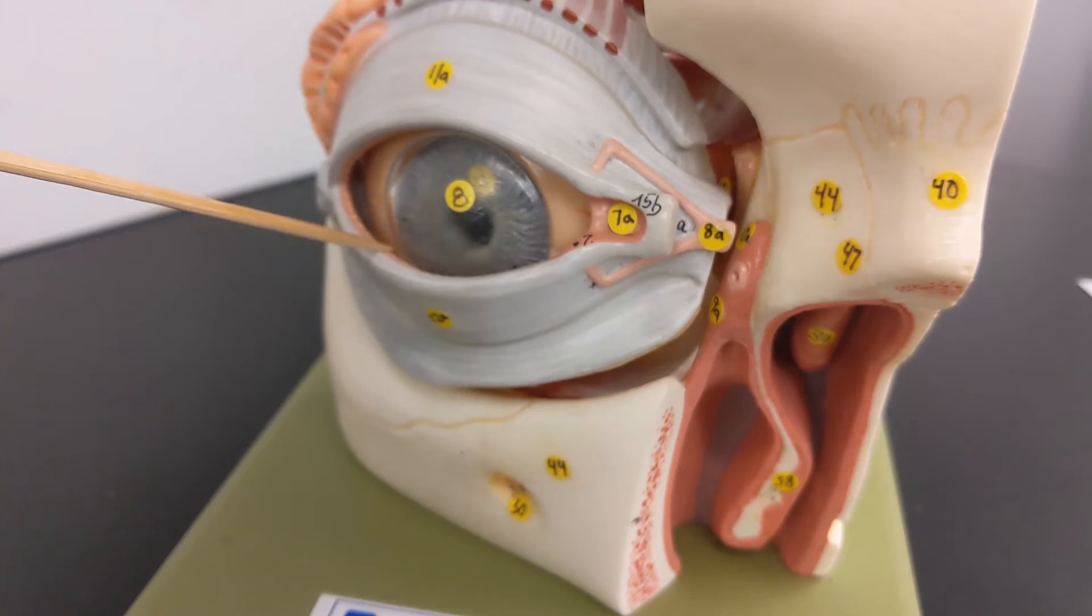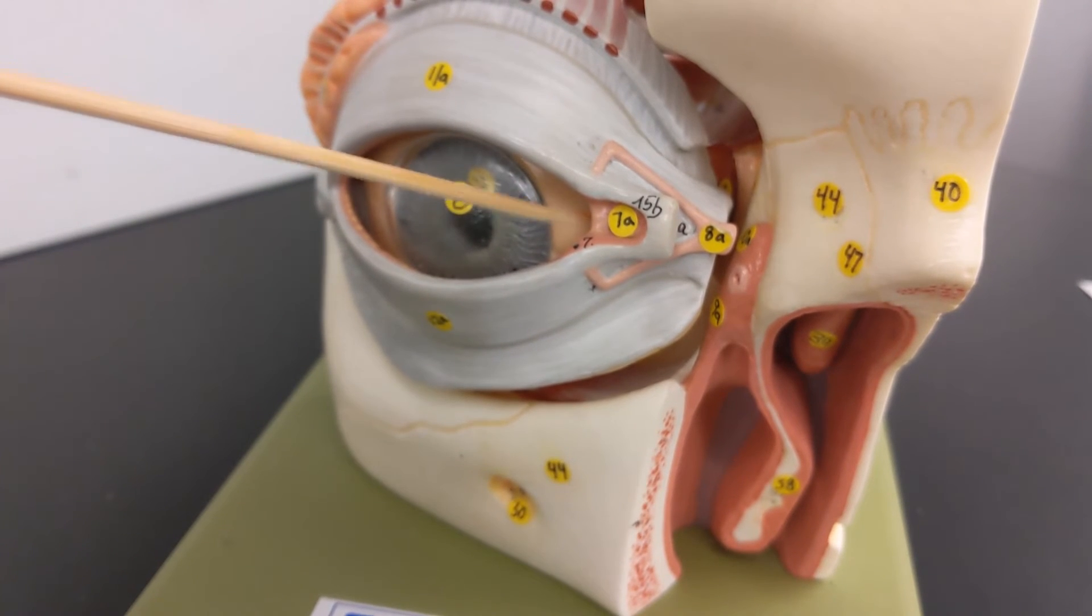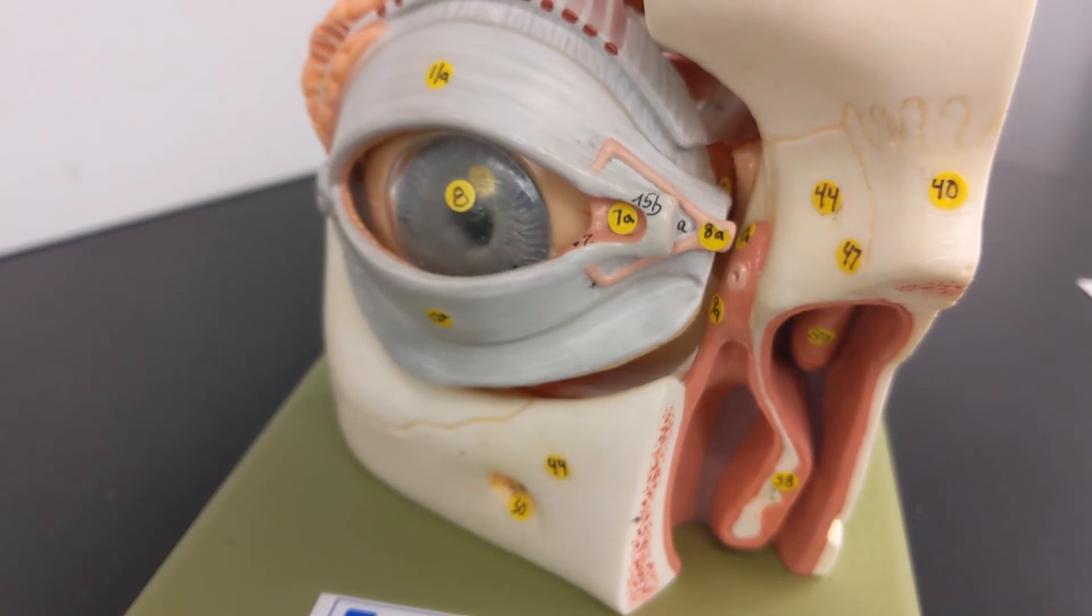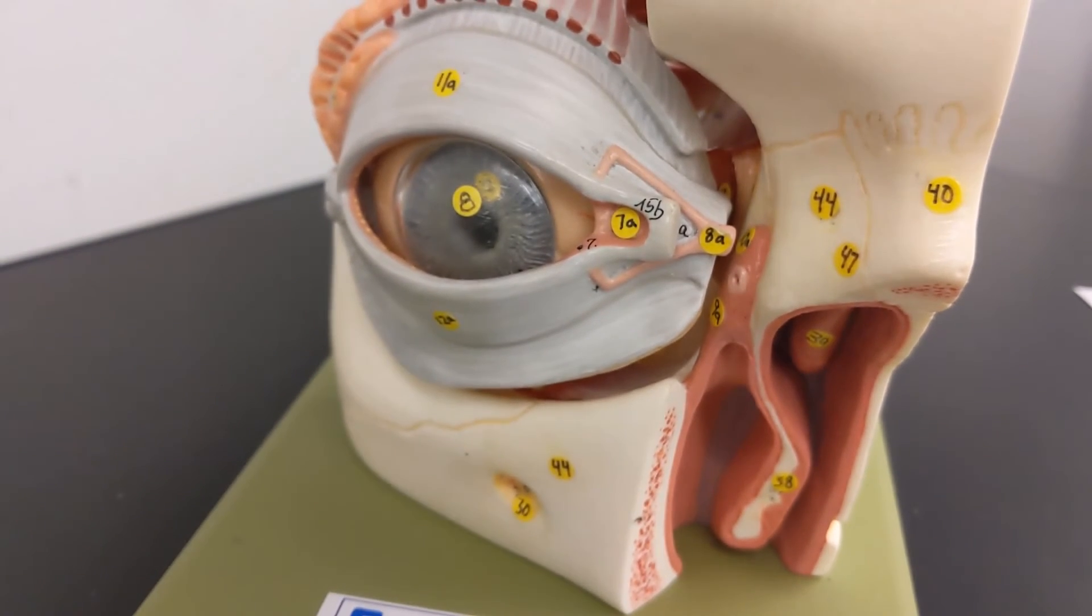So the lacrimal sac drains into your nose. So when you're crying, your tears run to your nose, which is why your nose runs when you cry.